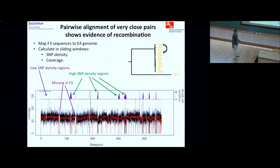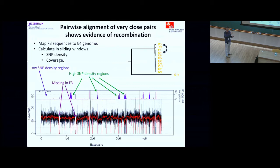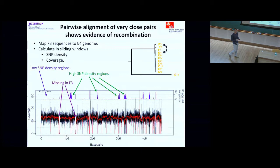The easiest way to see what's going on is to look at a very close pair of strains — F3 and E4. We align them and slide a window over the alignment, calculating the rate at which SNPs occur between this pair. In the vast majority of the genome this number is very low, but then there are sudden blocks where the SNP rate is much higher. There are also some regions that exist in one strain but not the other.